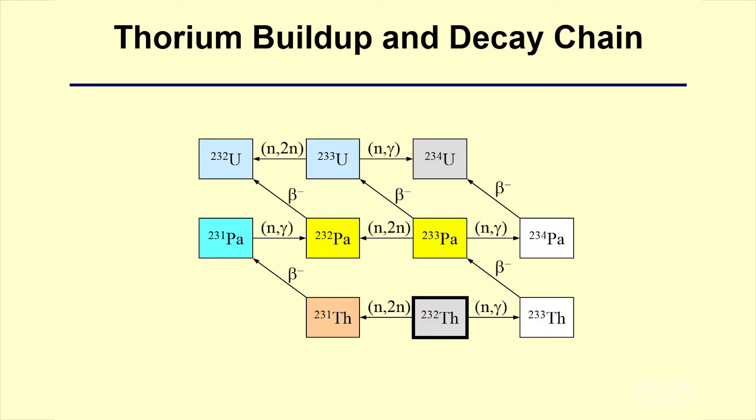There's also another buildup and decay chain that exists for reactors, which is the thorium chain. Thorium can be dug up out of the ground. It exists naturally. There's only one naturally occurring isotope of thorium: thorium-232. Thorium-232, when it absorbs a neutron, will then produce thorium-233. Thorium-233 then goes through a beta decay to protactinium-233, which then beta decays again to uranium-233.